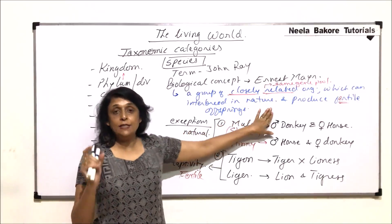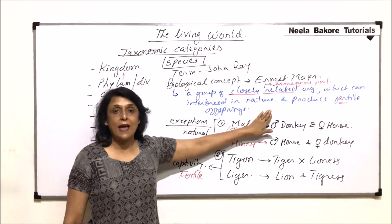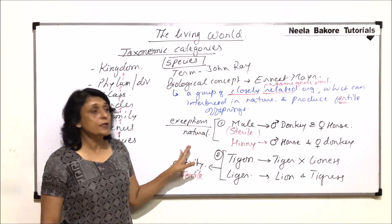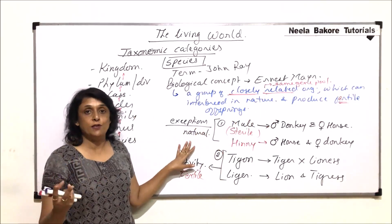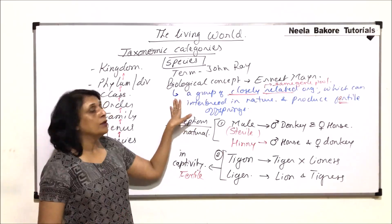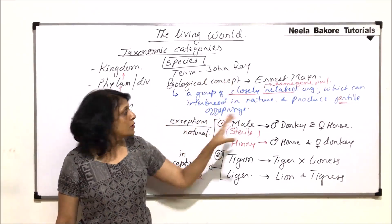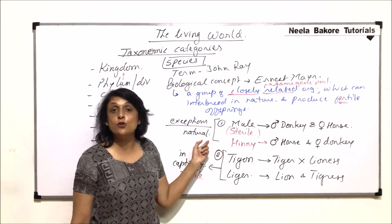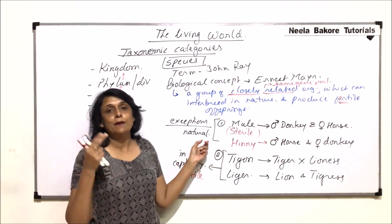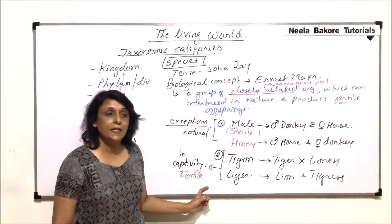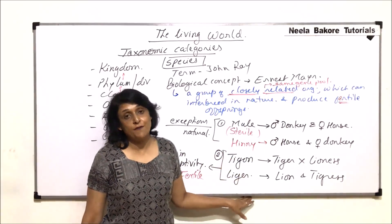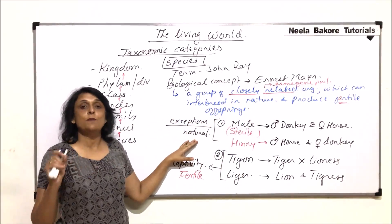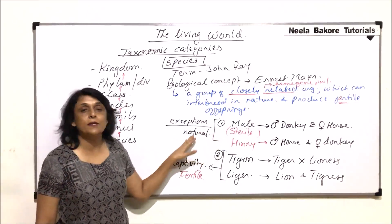When talking about a group of closely related organisms, they should be able to interbreed in nature and produce fertile offspring. But in some cases, reproduction is possible between members of two different species. Here a law of nature is broken — nature says only members of the same species should be able to breed. If breeding takes place between two different species, offsprings are sterile so that they cannot reproduce further. But in captivity, we have obtained fertile hybrids like liger. In nature, if inter-specific breeding takes place, the hybrids are going to be sterile.